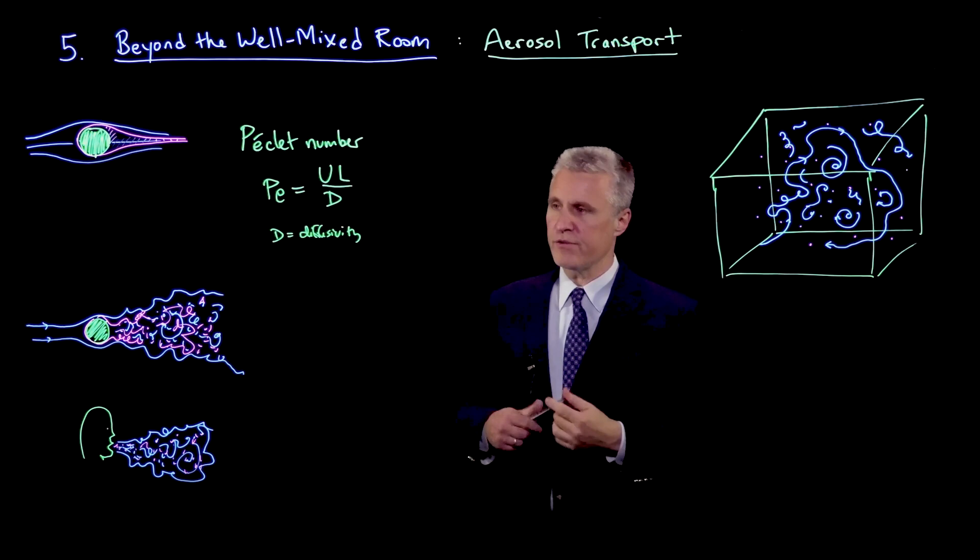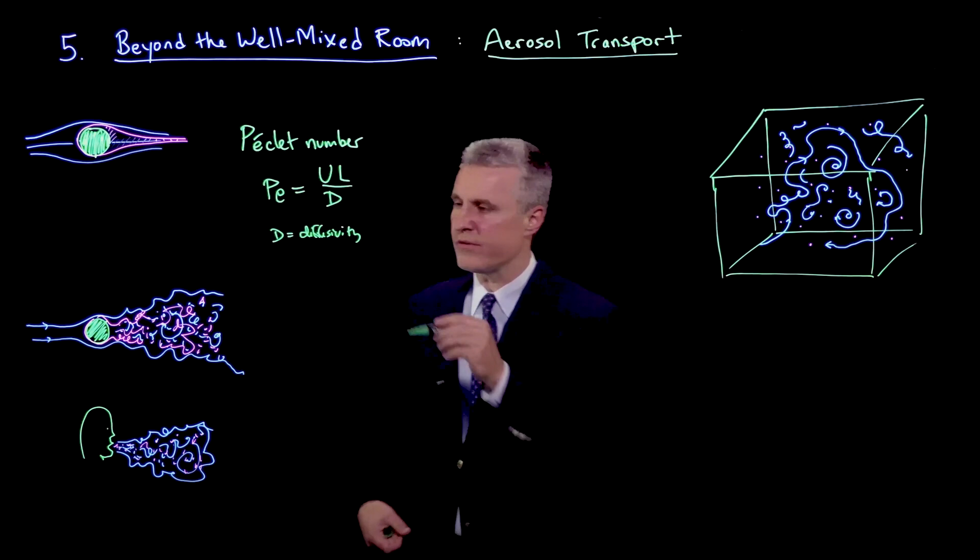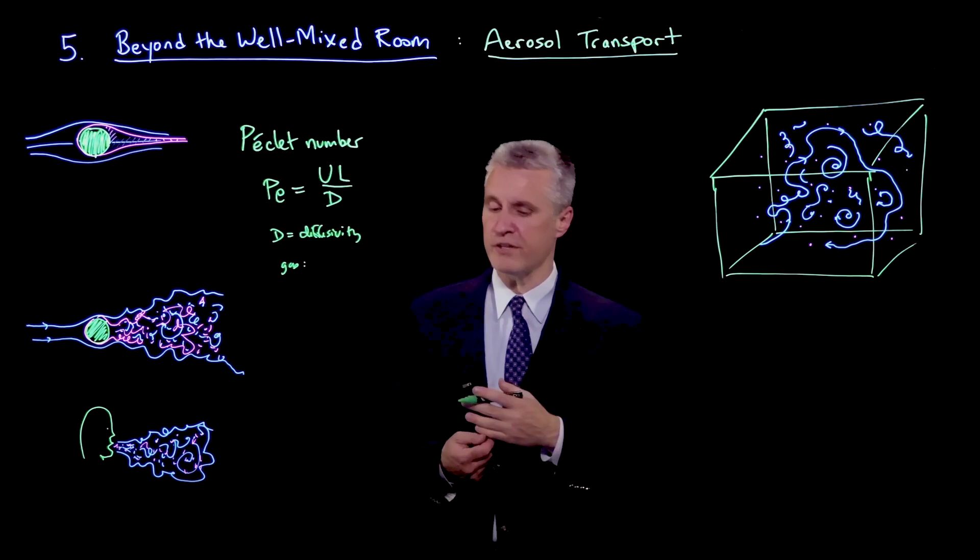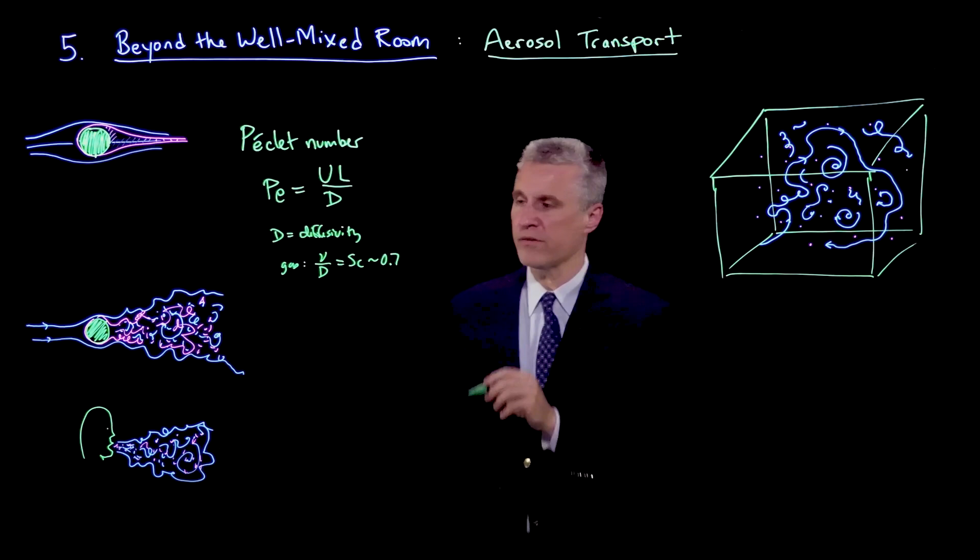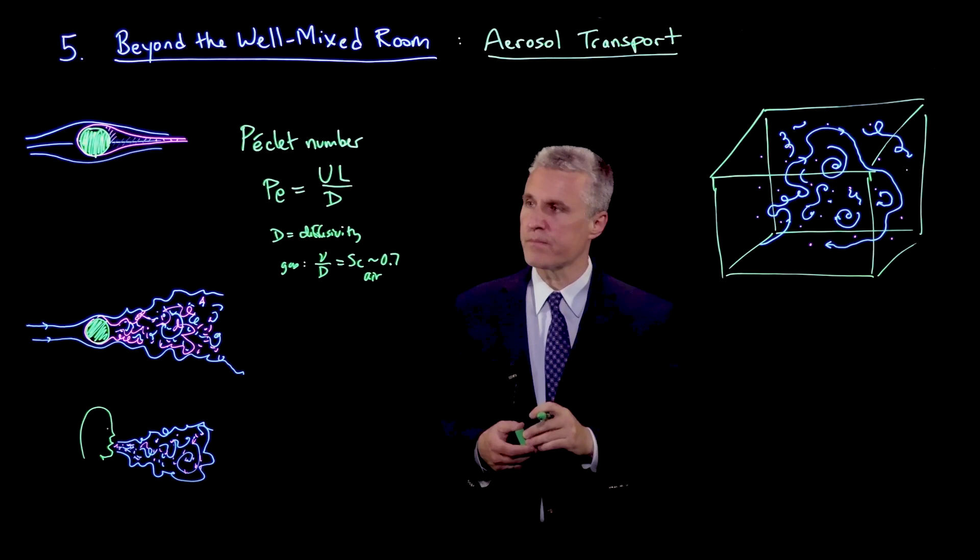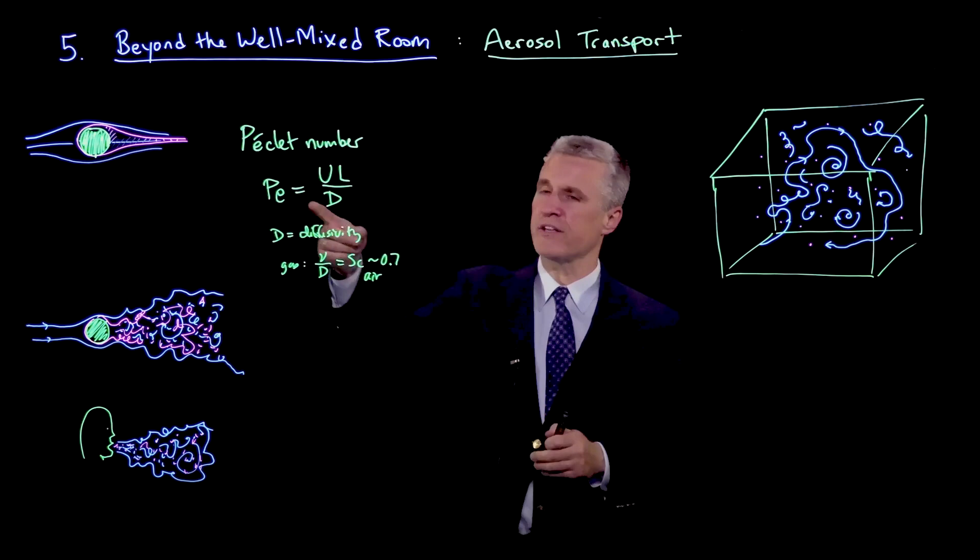If you want to think about diffusion of gas, for gas molecules, like for CO2 or oxygen in the air, then the ratio of kinematic viscosity to diffusivity of the gas molecules, that's called the Schmidt number, is also around 0.7 for air. So basically, molecules of momentum are diffusing at about the same rate. And so that tells us that for the molecules of the gas, the Peclet number is actually the same as the Reynolds number, and in fact, is very large.